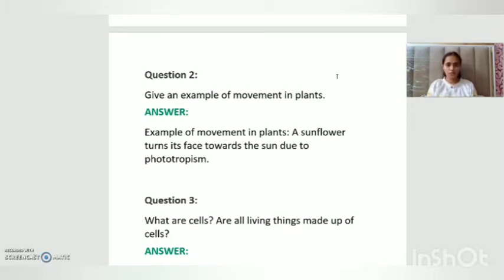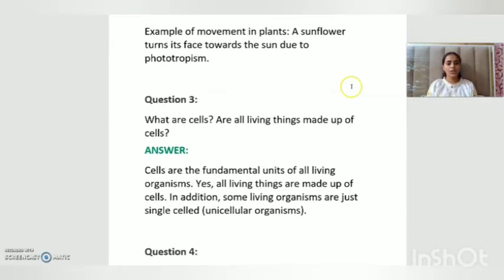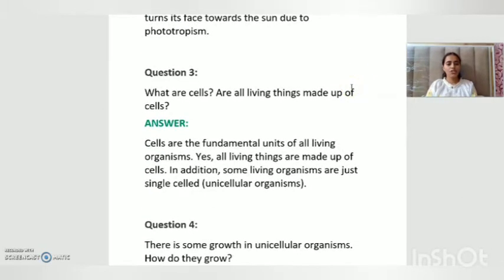As we watched in a video, a sunflower moves to face the sun. So the example of movement in plants is: a sunflower turns its face towards the sun due to phototropism.